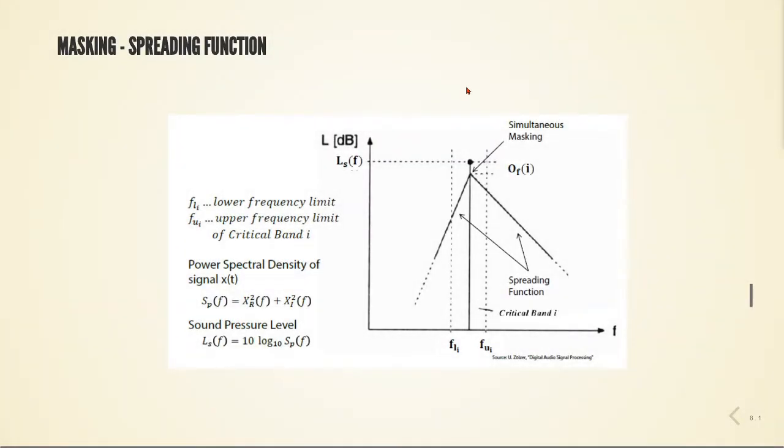For data compression, the use of sound perception in critical bands and absolute threshold only is not sufficient for high compression rates. The basis for further data reduction is the masking effects investigated by Svickler.